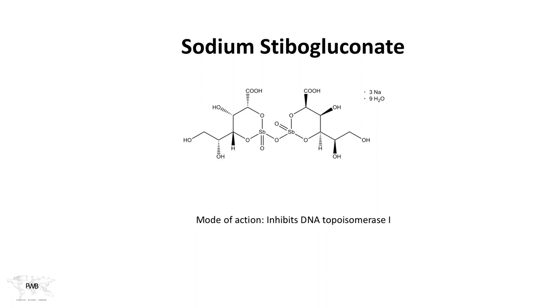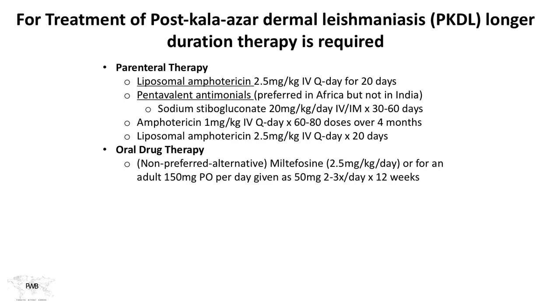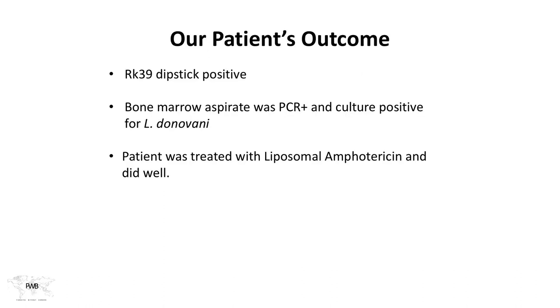Sodium stibogluconate is still a primary approach in Africa particularly. Miltefosine — used sometimes for mucocutaneous and quite often for cutaneous leishmaniasis — is a non-preferred alternative for visceral disease, usually not recommended, and remains very expensive. It can be brought in as combination therapy, and there are efforts to shorten the duration of liposomal amphotericin by combining it with miltefosine. For post-kala-azar dermal leishmaniasis — the tough case and important from a public health standpoint as patients are considered super spreaders — it's similar drugs but longer duration. Our patient had a positive RK39 dipstick, a large-volume bone marrow aspirate that was PCR-positive and culture-positive for Leishmania donovani, and was treated with liposomal amphotericin. He did well.